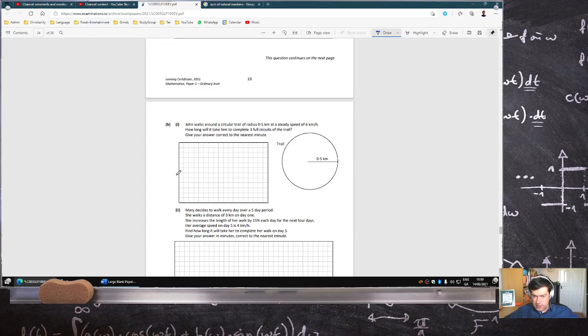John walks around a circular trail at that speed. How long would it take to complete three full circuits? So distance is 2 pi r times 3 over speed, which is 6, and the radius is 0.5. 2 times pi times 0.5 times 3, divided by 6, 1.57 hours, which is 94 minutes.